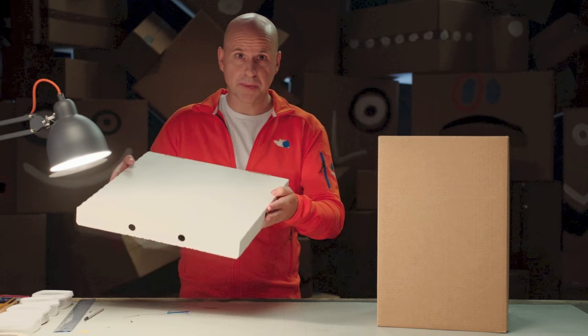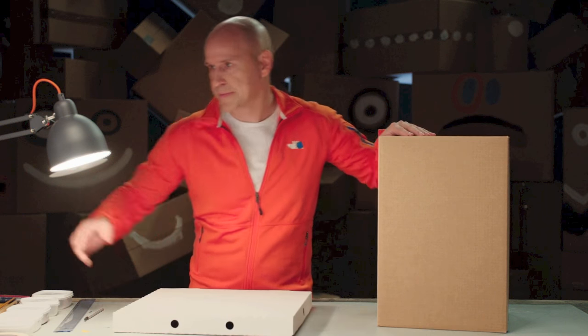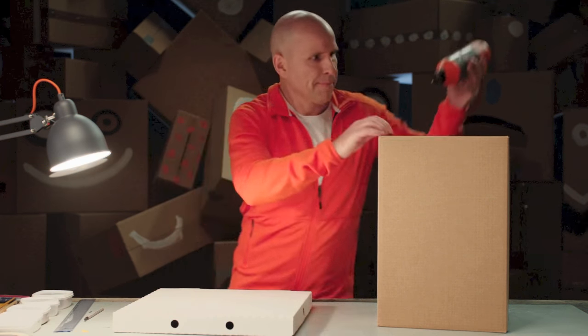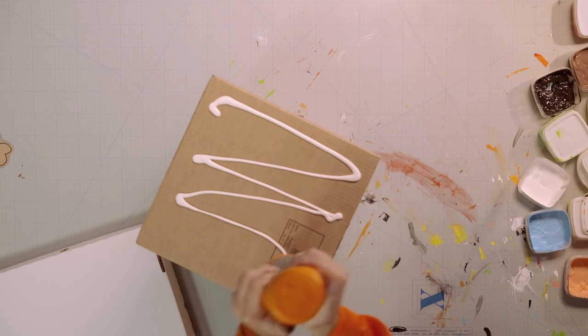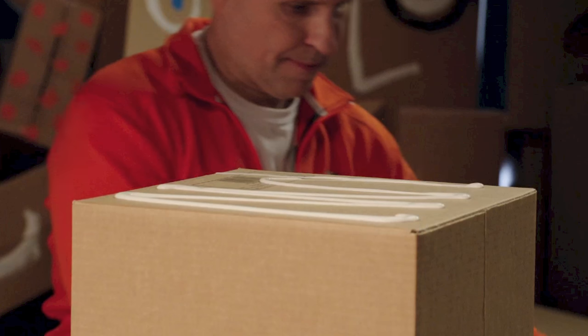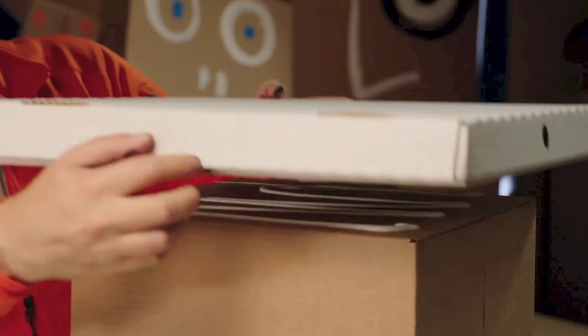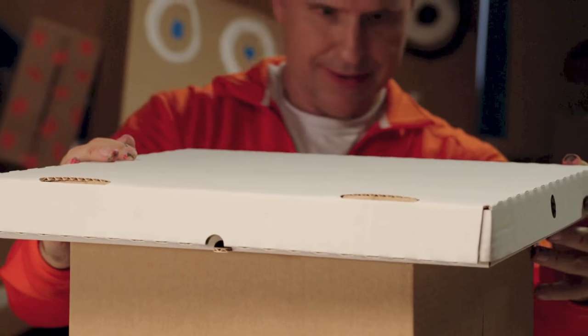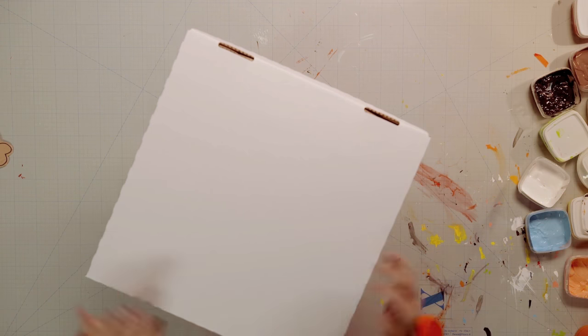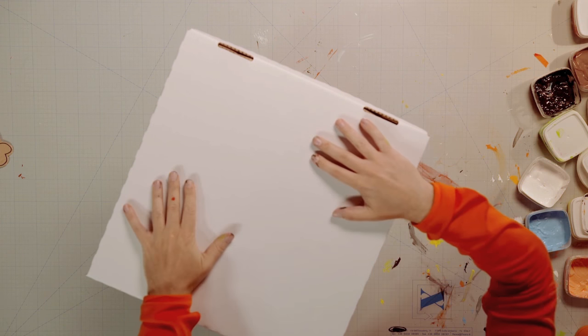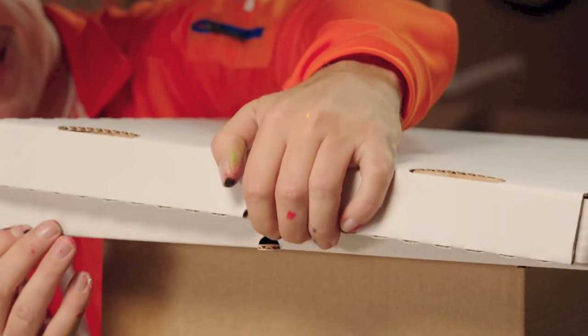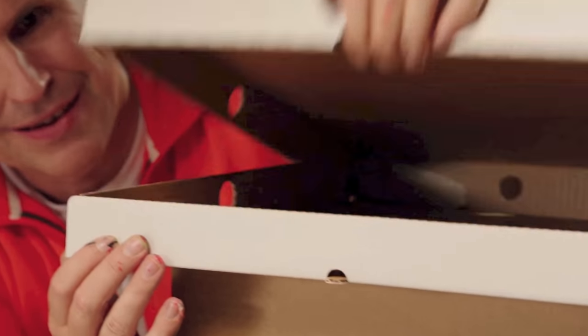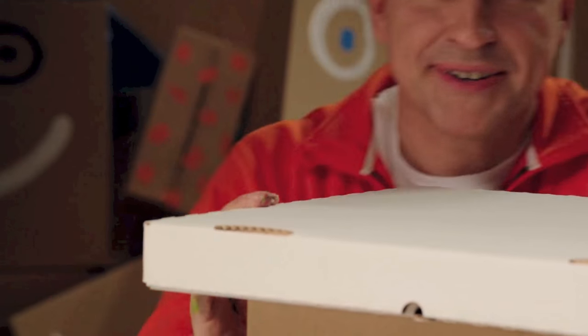We start with gluing the pizza box and the regular box together. Spread some glue on top of the tall box and place the pizza box in the middle. It's important to press down firmly so the glue is in contact with both boxes. I'll just check that the pizza box opens and closes smoothly. Yeah, that'll work perfectly.